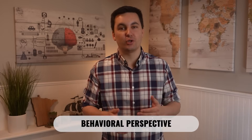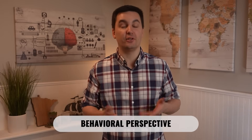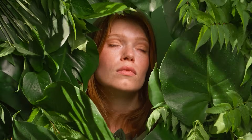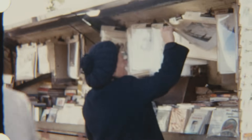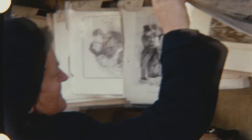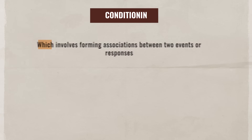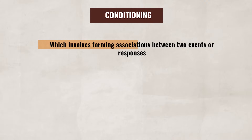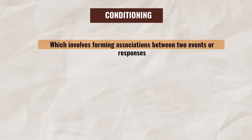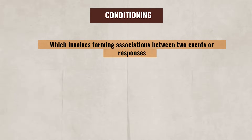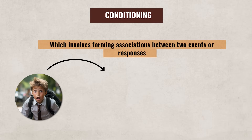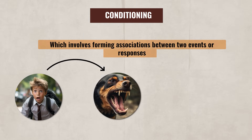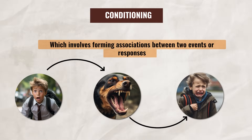To start, we need to talk about the behavioral perspective in psychology, which is all about how we learn from our environment. The focus here is how an individual's actions are influenced through their environment. Learning here happens through conditioning, which involves forming associations between two events or responses. Conditioning is a type of learning where an individual will link one stimulus to another, and this connection often causes a certain reaction to occur.